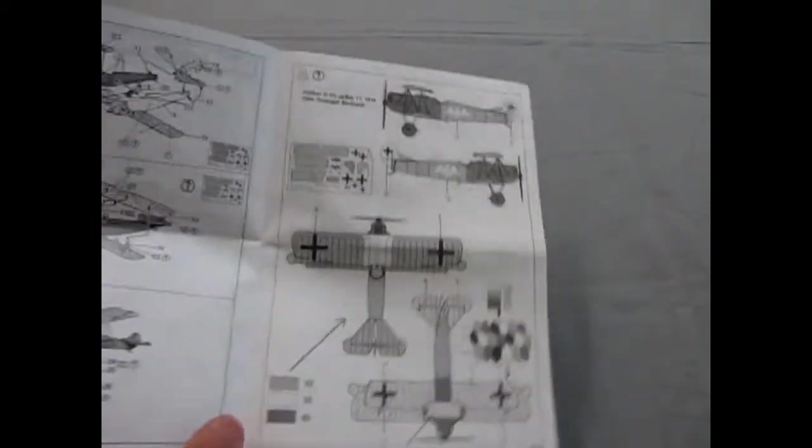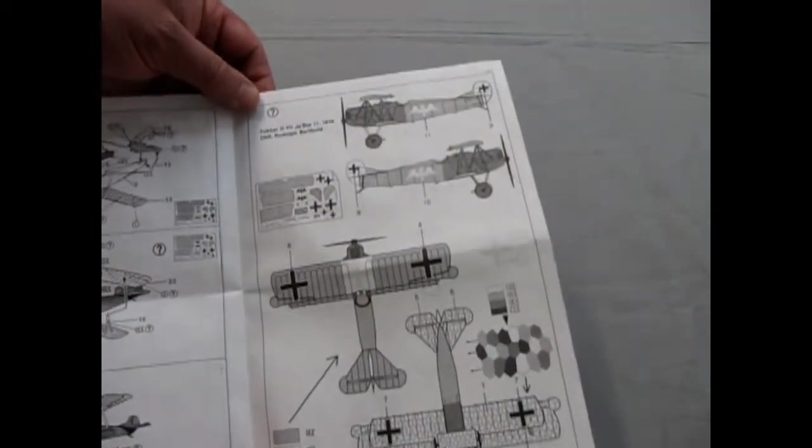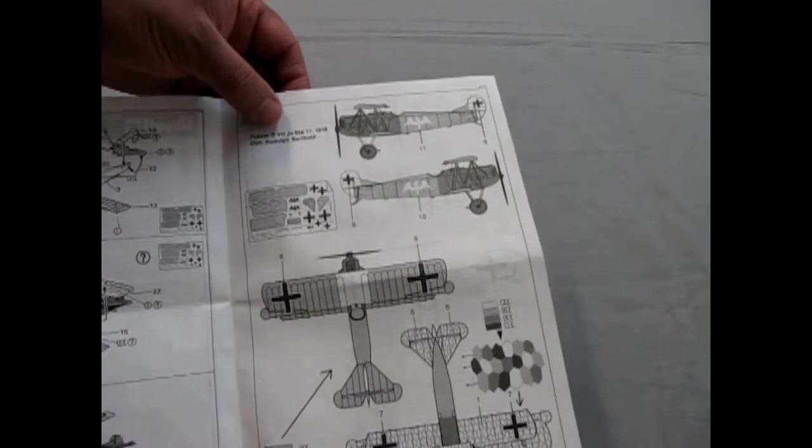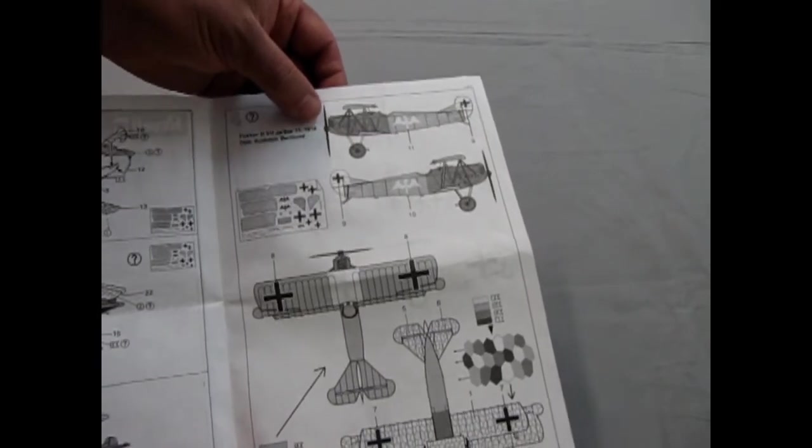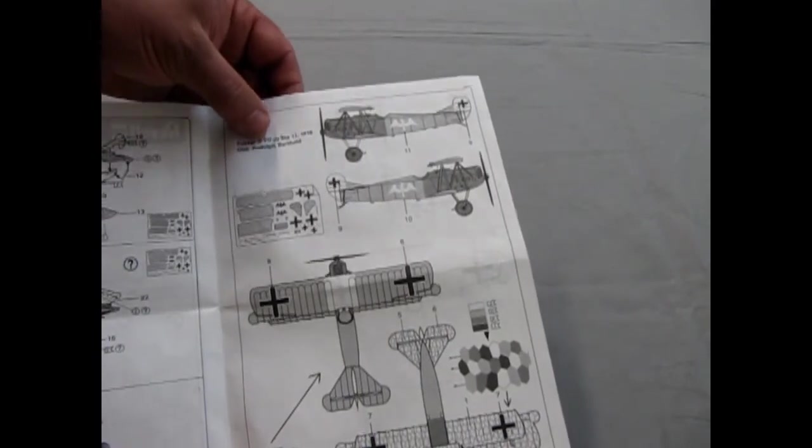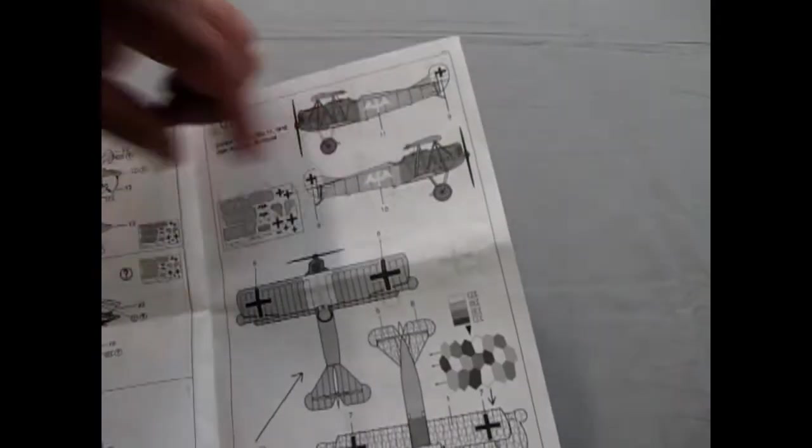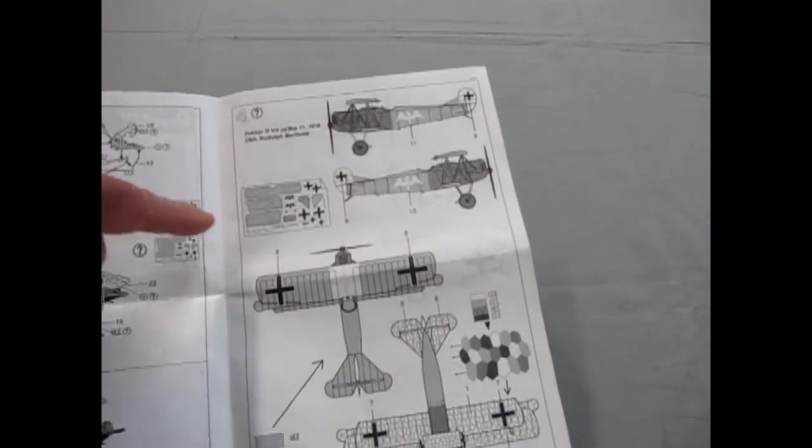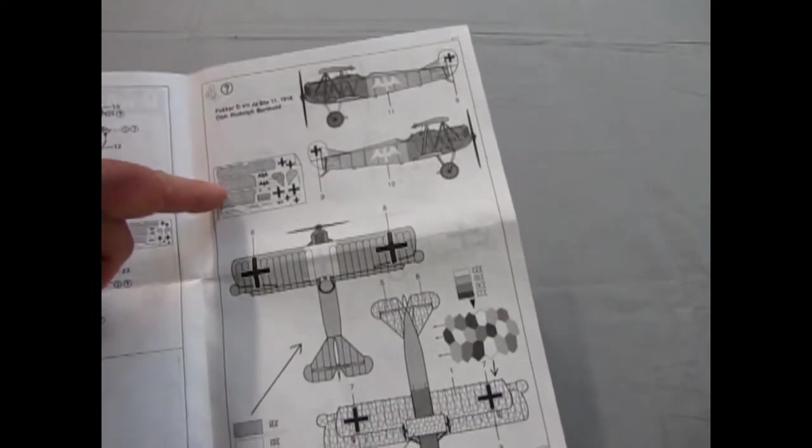Okay so here they have a couple of call-outs for different pilots so Fokker D7 Jasta 11 1918 flown by Rudolf Berthold. So that's his airplane and then they show you the decal sheet.